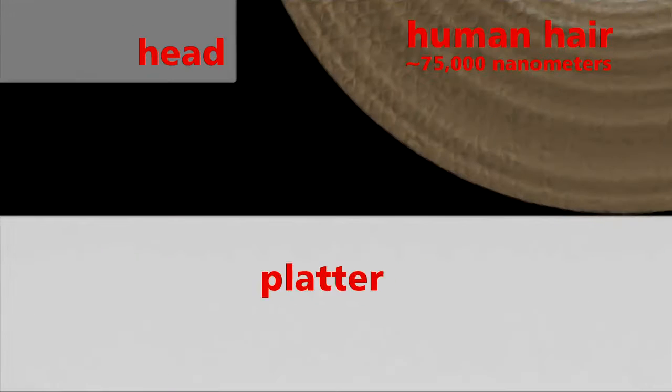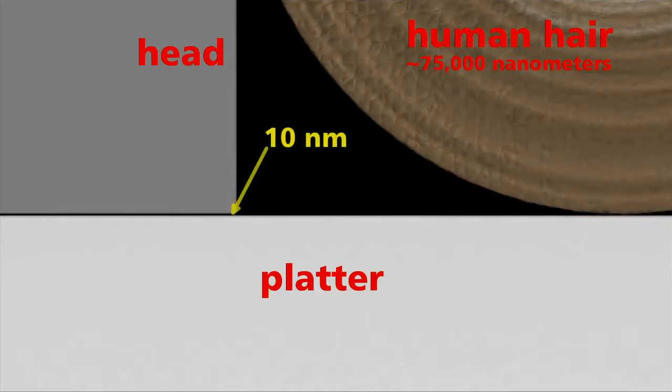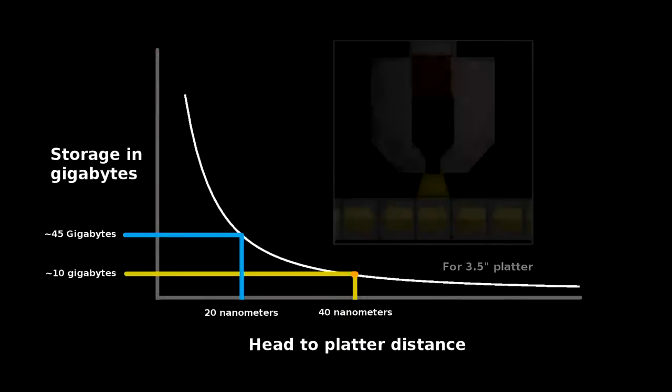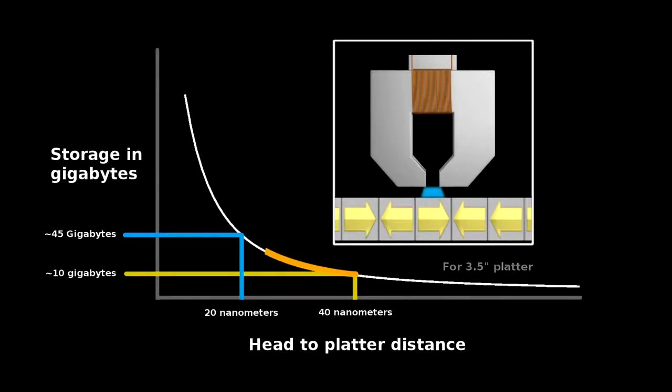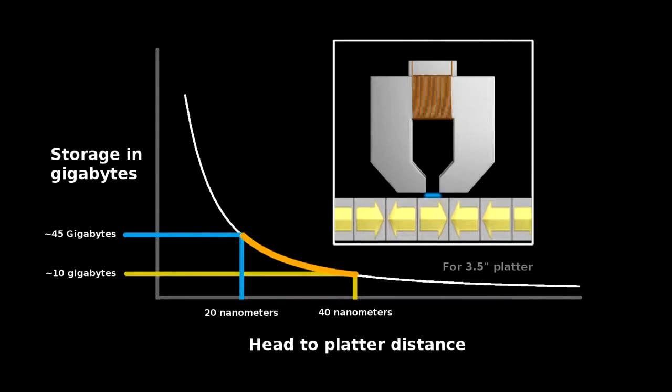The head gets astonishingly close to the disk surface. 100 nanometers in older drives, but today under 10 nanometers in the newest ones. As the head gets closer to the disk, its magnetic field covers less area, allowing for more sectors of information to be packed onto the disk surface.